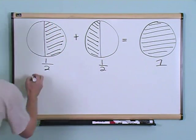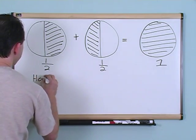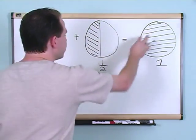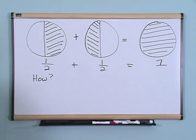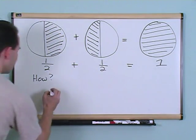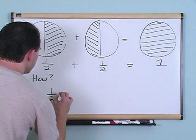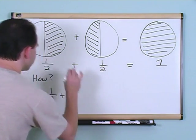Now, how can this be? I mean, it makes sense just by looking at the pictures, but how does this added with this equal one? And that's what I'm going to teach you here. Let's go ahead and write it down: one half plus one half.